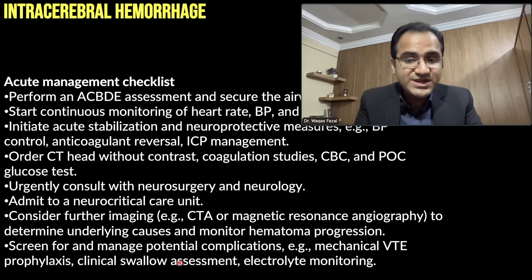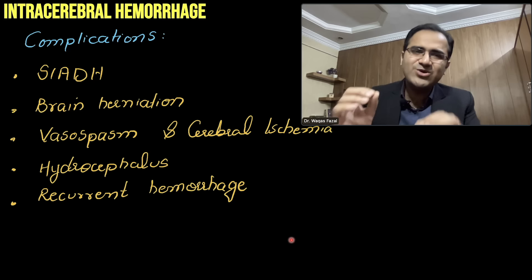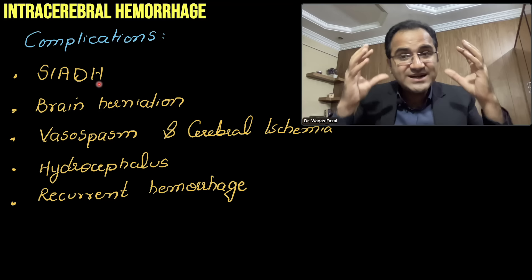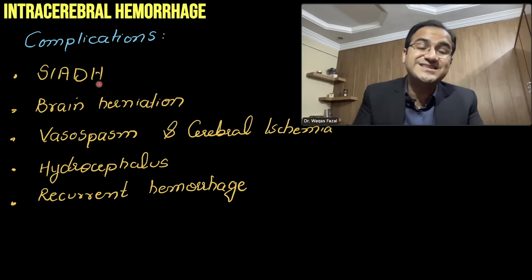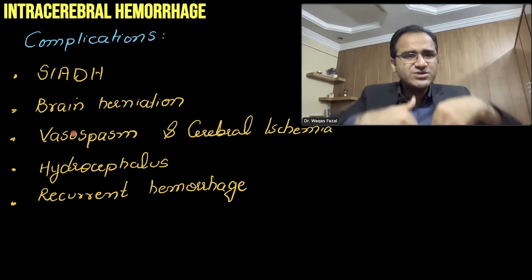Screen for potential complications. An important complication tested in exams is SIADH — damage to the brain can cause increased production of ADH (antidiuretic hormone), resulting in syndrome of inappropriate ADH secretion. Other complications include brain herniation due to elevated pressure and vasospasm of vessels leading to cerebral ischemia.